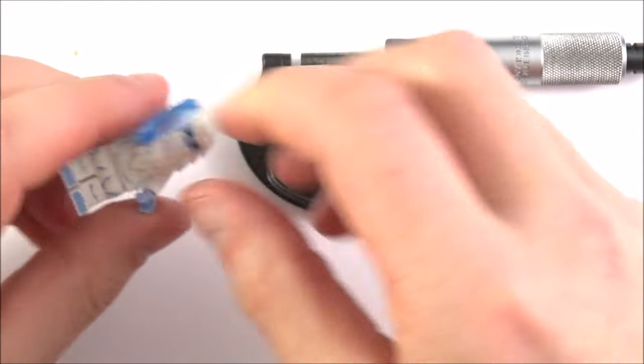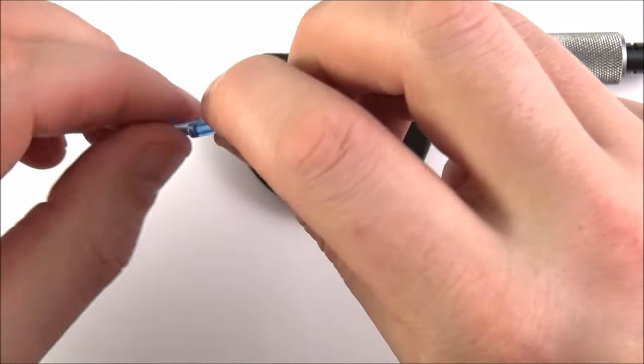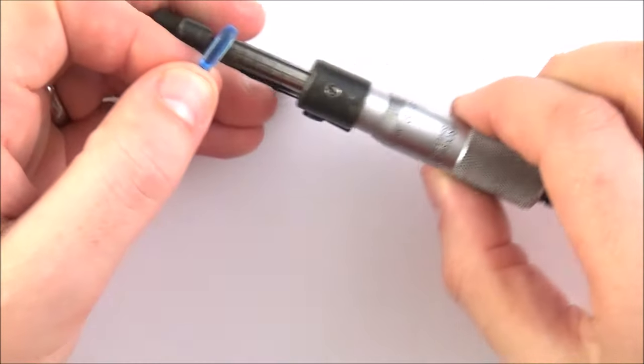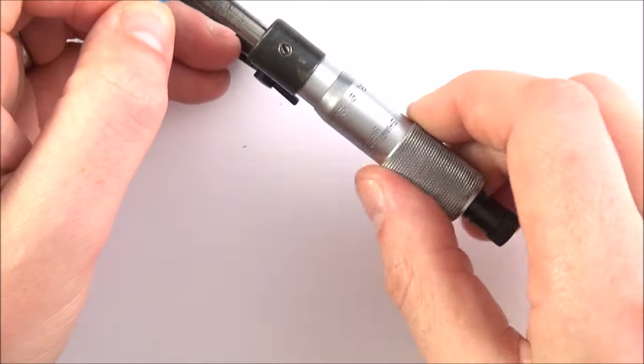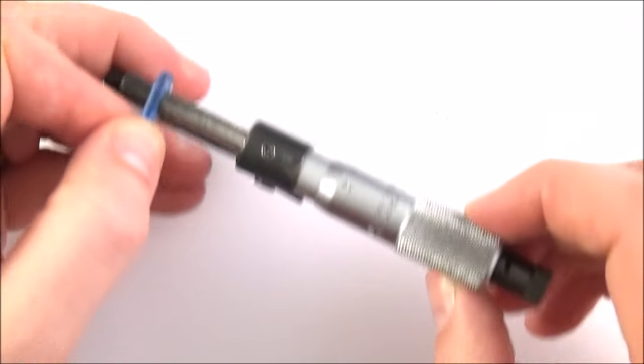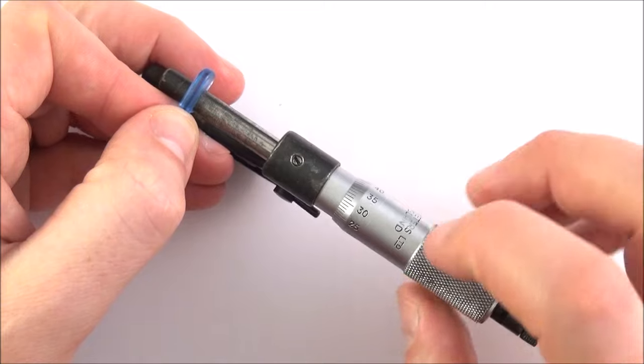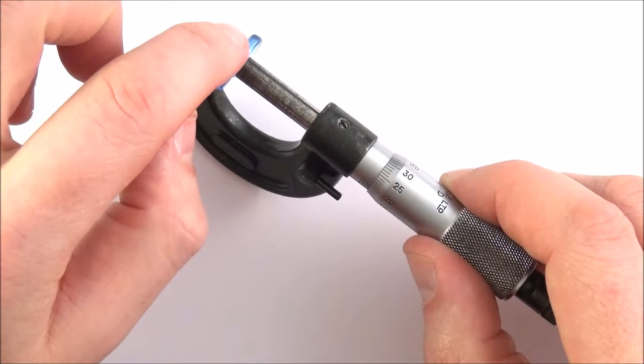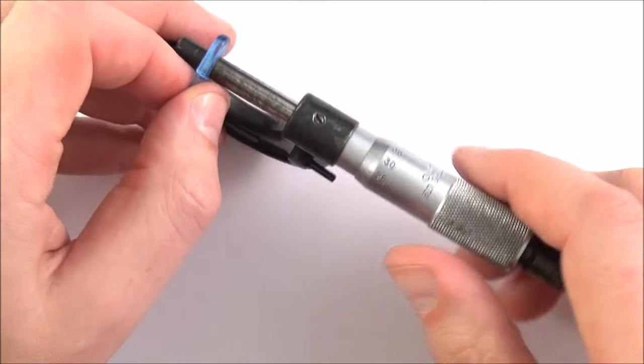Let's imagine that once again we're going to measure the diameter of this ice lolly. We need to put it within this part here. I'm just going to open the jaws up slightly, and rather than just tightening using the big knurled grip over here, if you tighten that too much it's going to deform the thing that you're measuring.